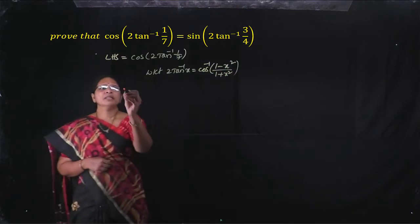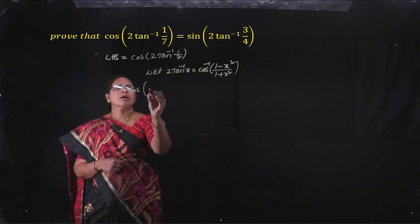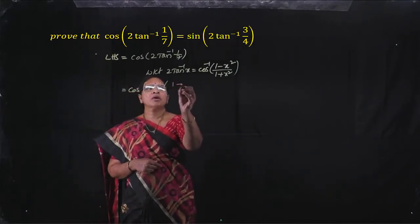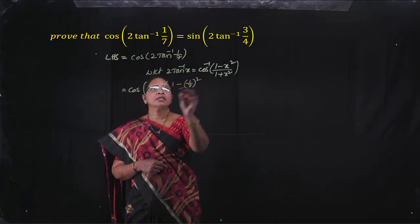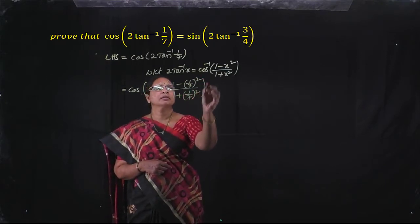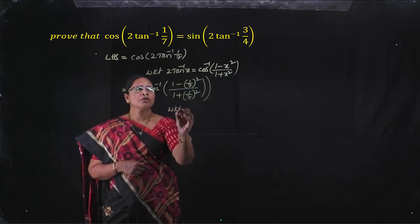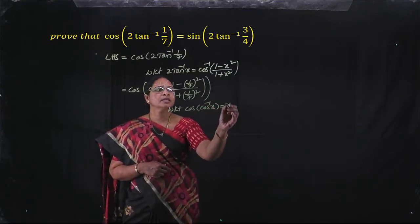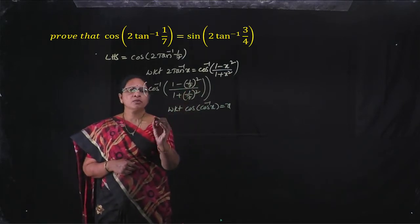Apply this formula: cos inverse of 1 minus x square by 1 plus x square, where x is 1 by 7, that is 1 by 7 whole square by 1 plus 1 by 7 whole square. We know cos of cos inverse x is x, so that is equal to 1 minus 1 by 7 whole square by 1 plus 1 by 7 whole square.